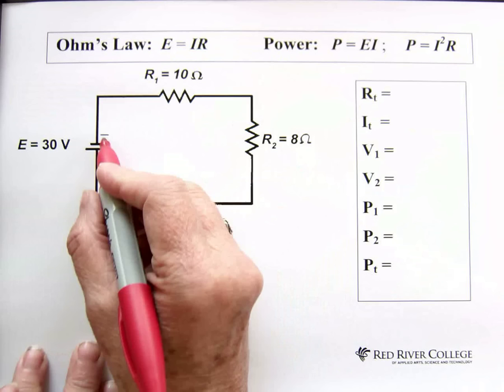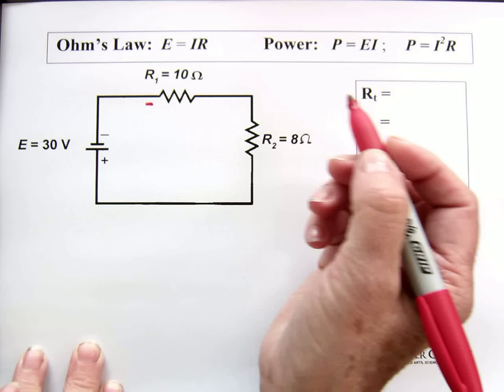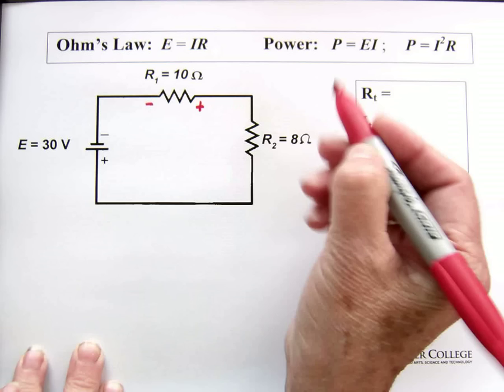We have a negative side of the battery here on the short side, so it's negative on this side of this resistor and positive on the other side. Negative on this side of that resistor and positive on the other side.